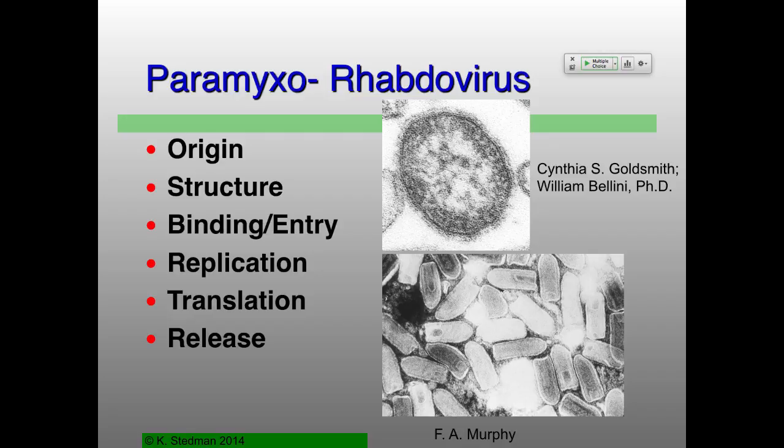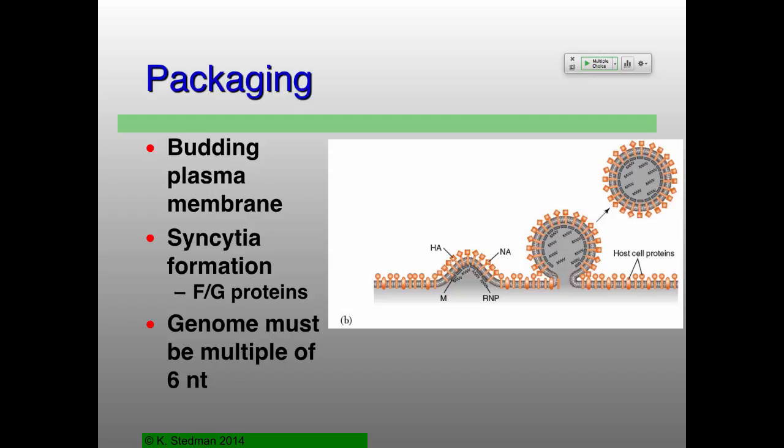The question is about when the proteolytic cleavage takes place before fusion can occur. That happens during the production of each of these membrane proteins. They'll be processed through the endoplasmic reticulum and the Golgi, and that's the point at which the cleavage takes place — so it actually happens before they reach the cell surface. Once they get out to the outside of the cell, they are now competent to fuse.